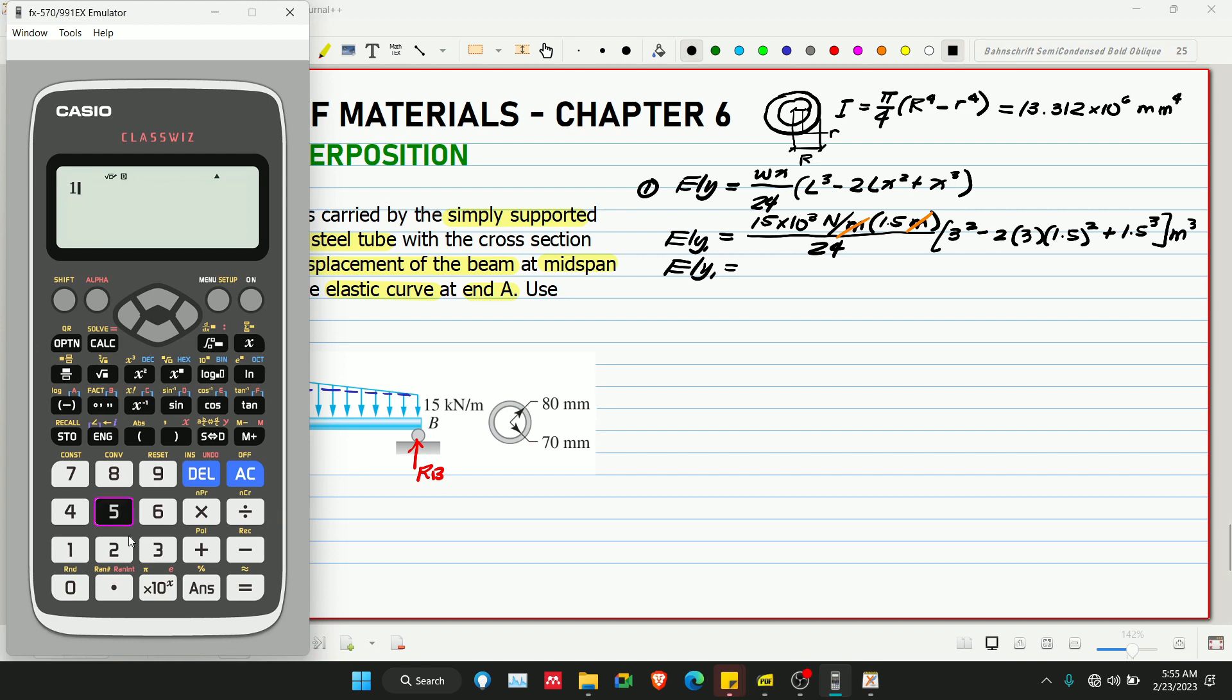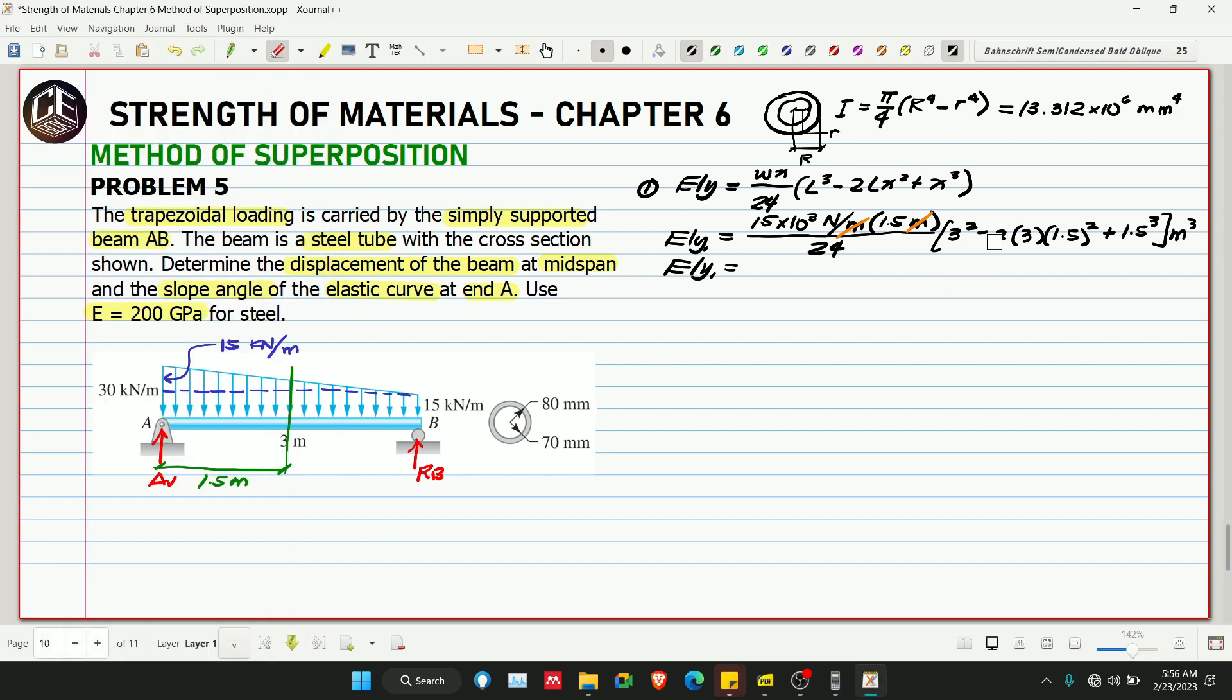So EIY1 equals 15 times 10 to the 3 multiplied by 1.5 over 24 multiplied by 3 squared minus 2 times 3 times 1.5 squared plus 1.5 cubed. This is positive because it's cubed. So this is 1518.20313 newton meter cubed, and the effect is downward.